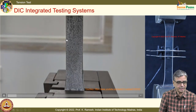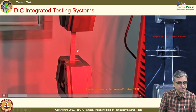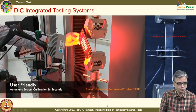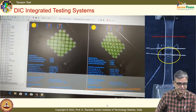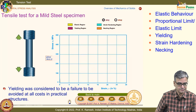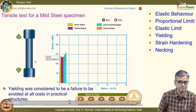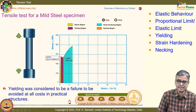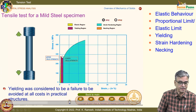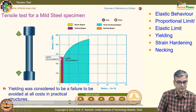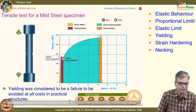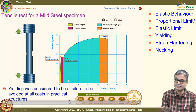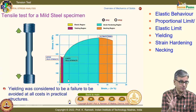We have also looked at DIC along with a tensile testing machine to get data and obtain true stress and true strain. In the simple tension test we looked at many things: elastic behavior, proportional limit, elastic limit. Yielding is very prominent in mild steel — a peak and then it drops immediately. The usable range is very small, about 0.2 percent strain. This is how the material fractures.